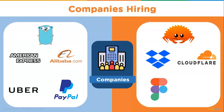Rust has helped Figma drop the load from their servers. Discord, an instant messaging and digital distribution platform where users communicate via voice calls, video calls, text messaging, and file sharing in private chats or community servers, uses Rust in multiple places of their codebase, both on the client and server side.